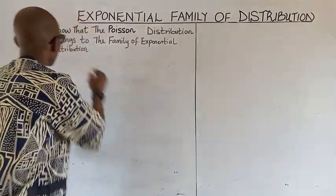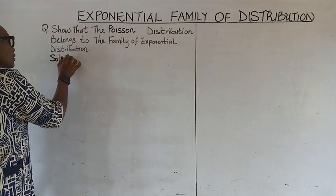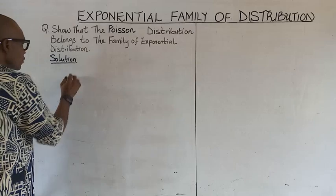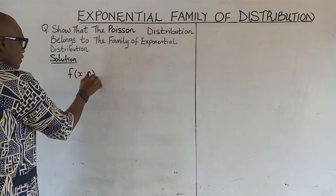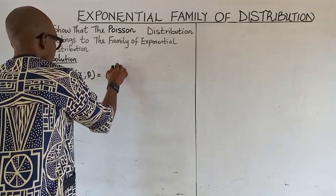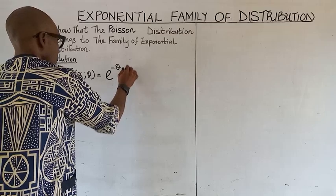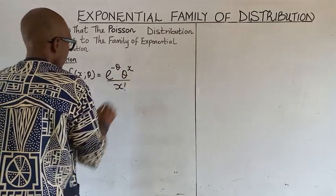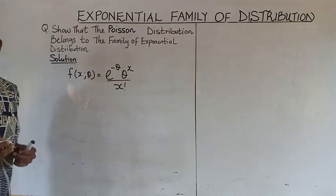The first thing to do is to write out the distribution. For the Poisson distribution, we have it as exponential of negative theta, times theta raised to the power of x, all over x factorial. This is the Poisson distribution.